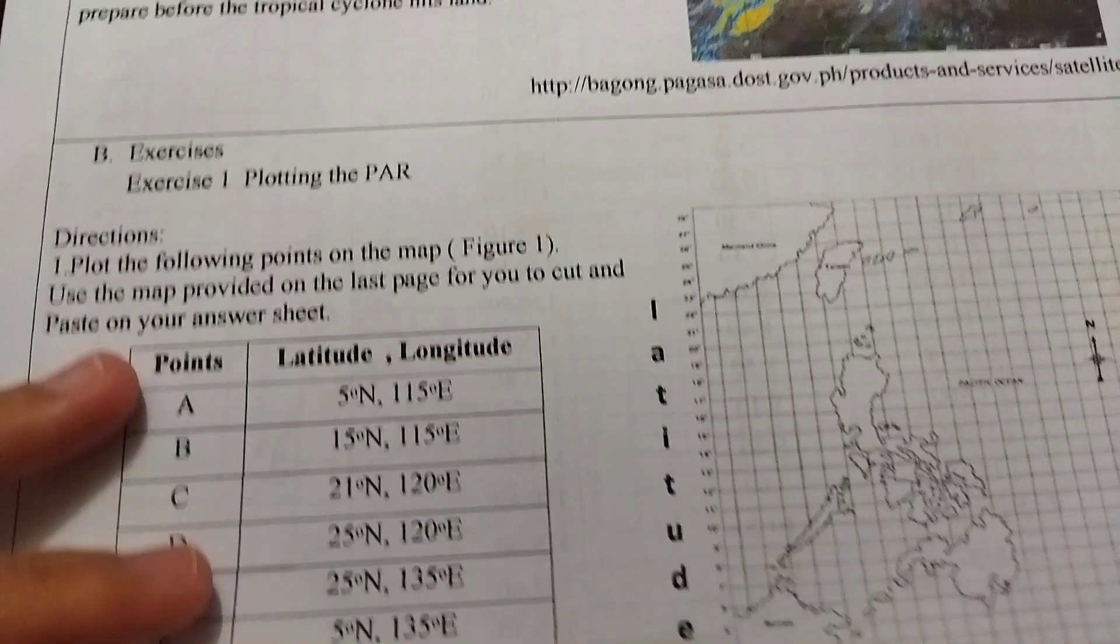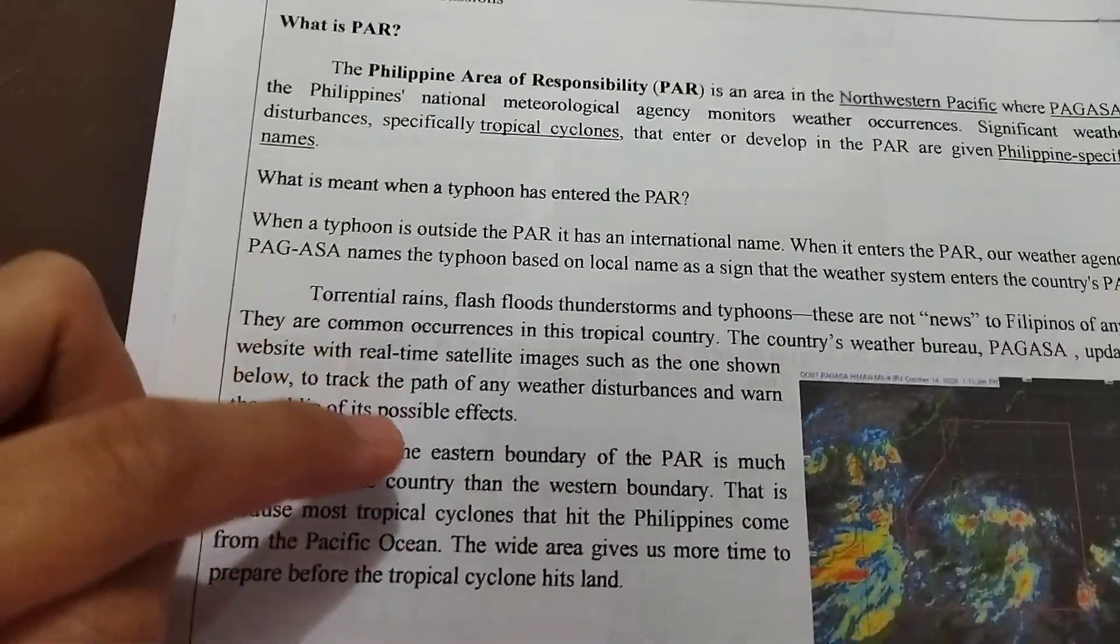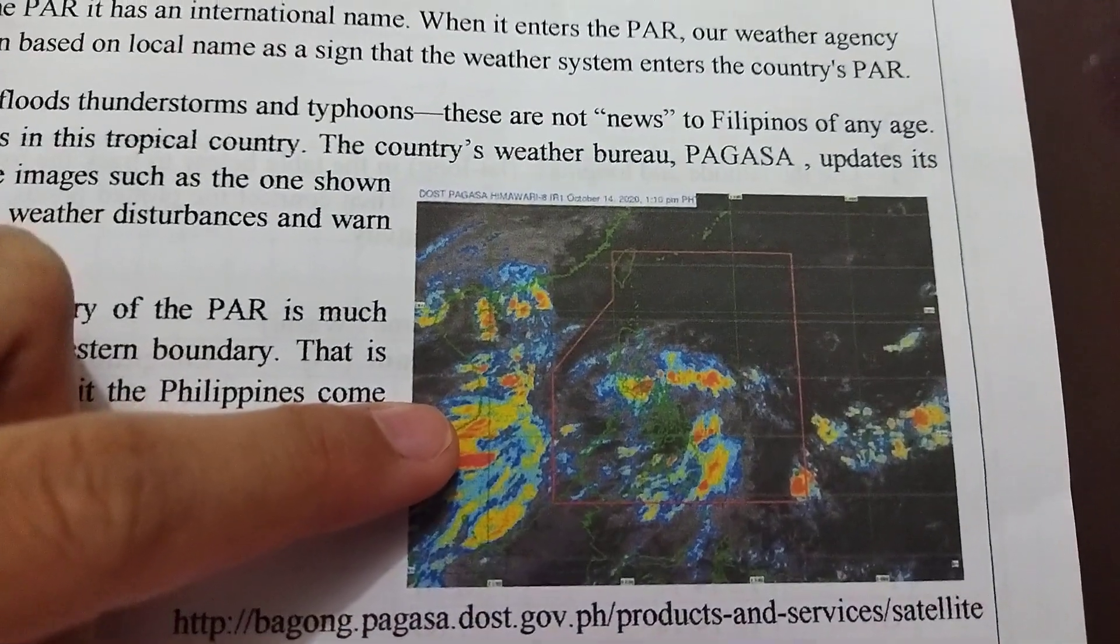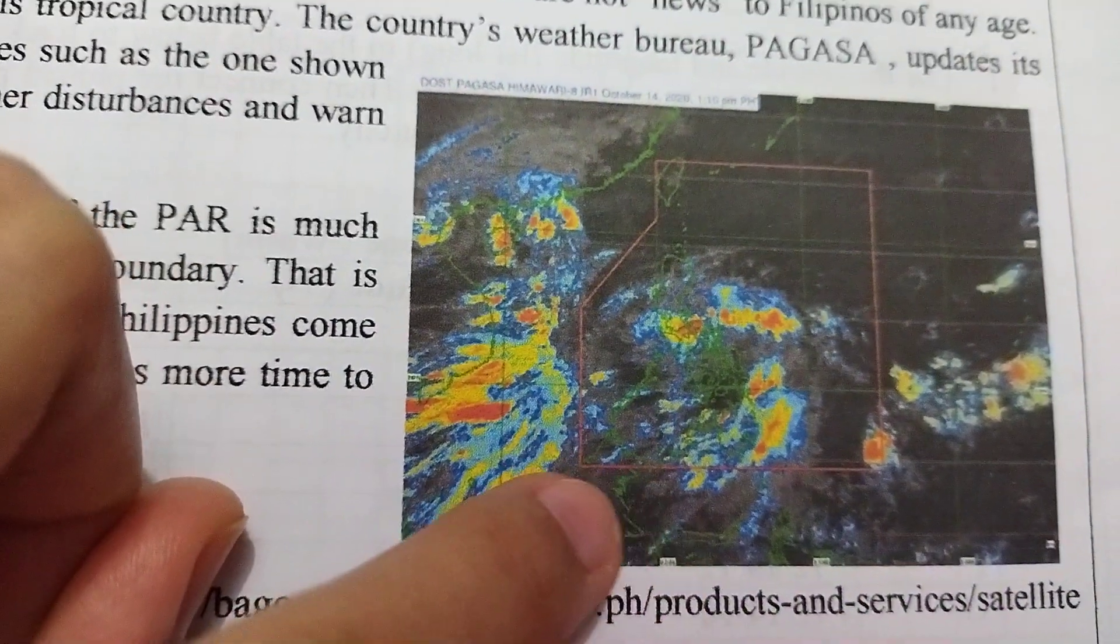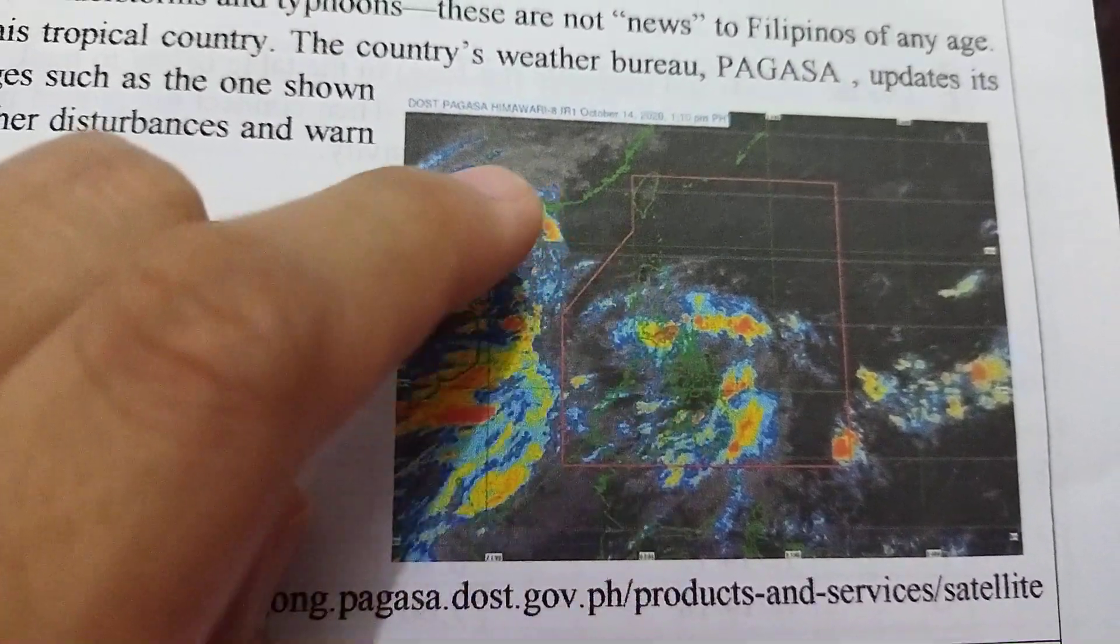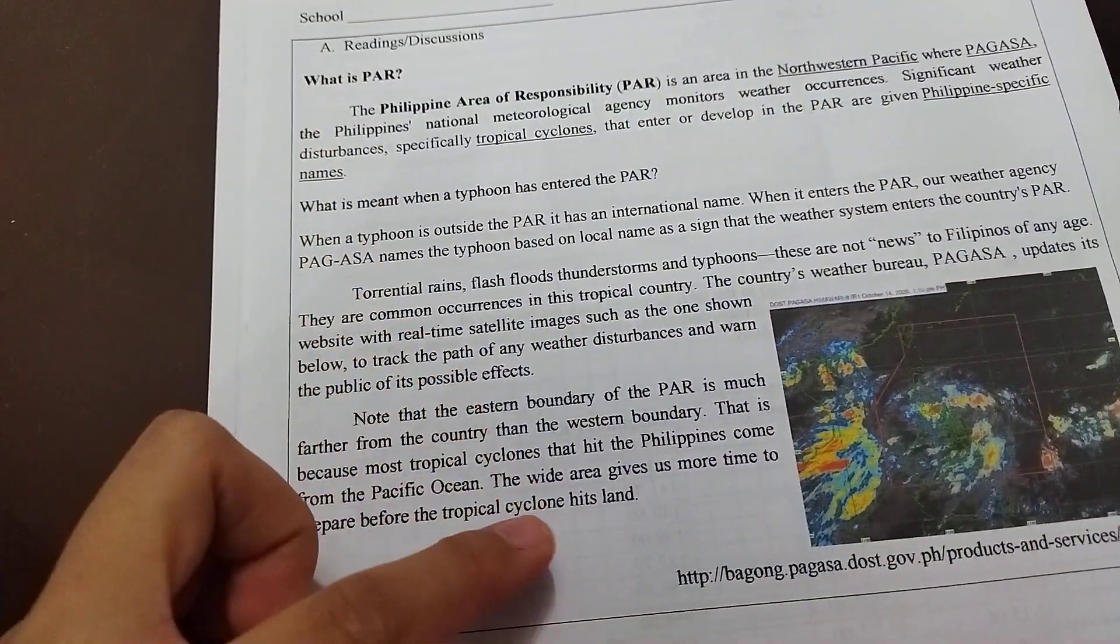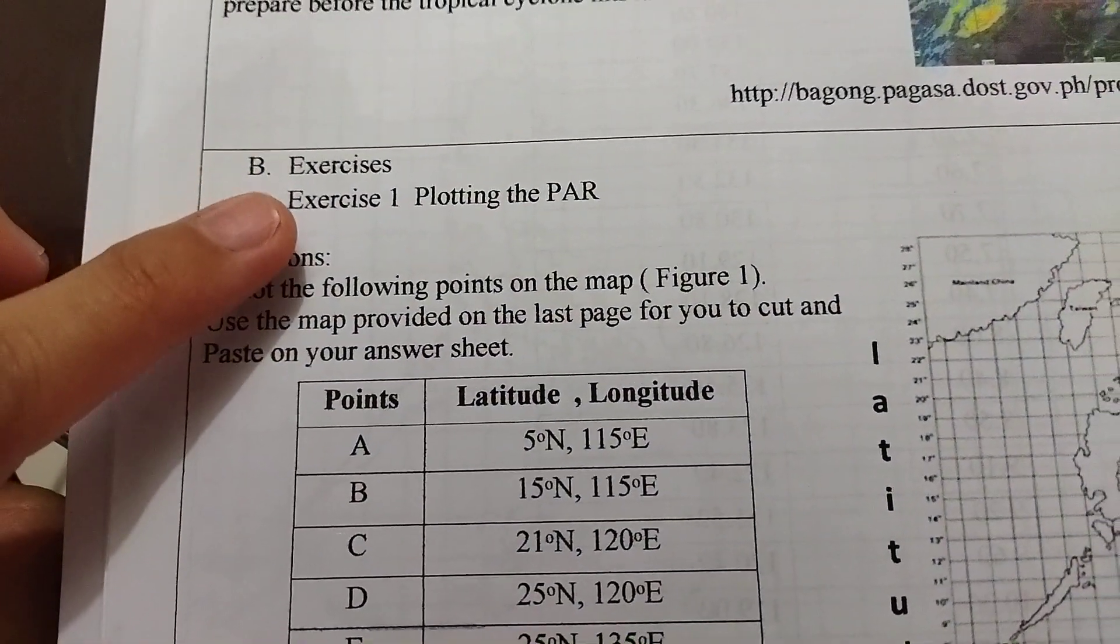The map that we are going to use can be found at the back page. Next, we are going to read everything and understand what you have read. We have here a diagram. Can you look closely? We have the Philippines in green line and a red line enclosing the Philippines. This is a weather map. After you read and understand everything in the discussion part, you are going to answer exercise number 1.